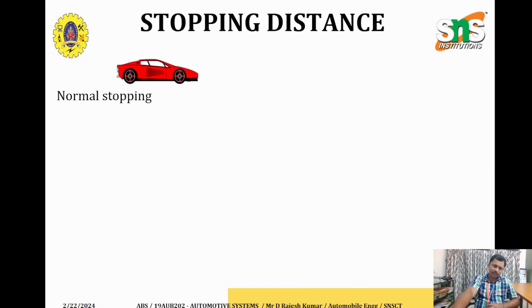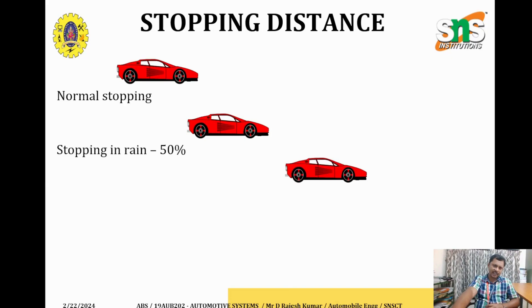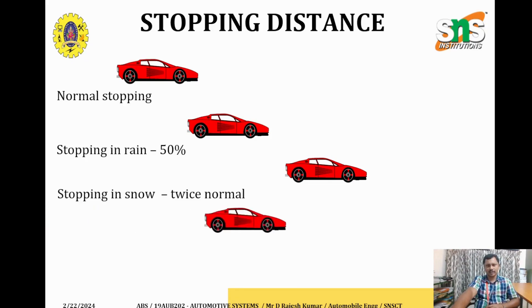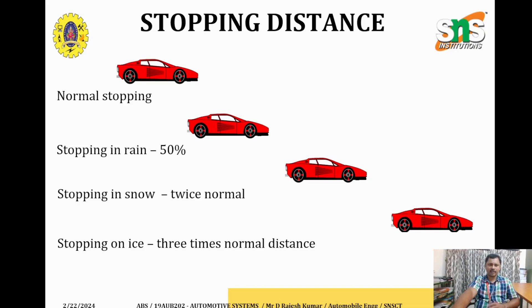Stopping distance is the main thing. The normal stopping distance is compared across three different conditions. Stopping distance in rain is 50% more than normal. Stopping on ice is twice the normal. Stopping distance on snow over ice is three times the normal. This is how the car stops according to various road conditions, and this is why we use ABS.